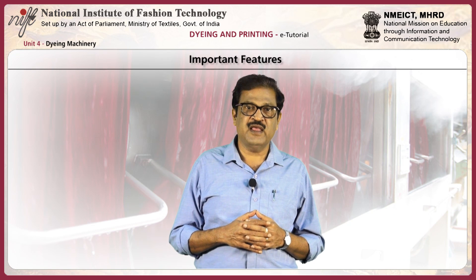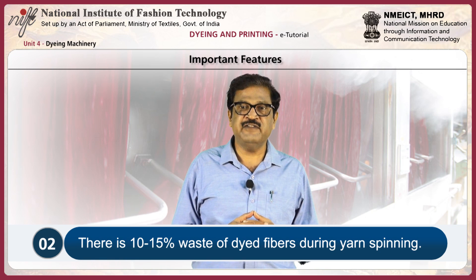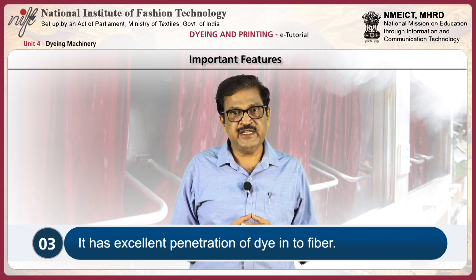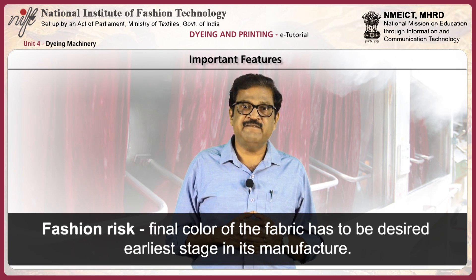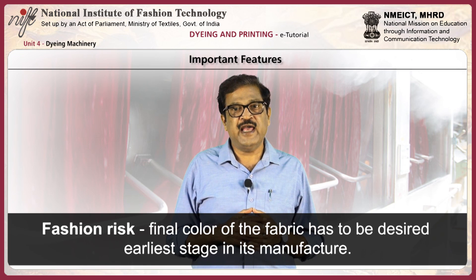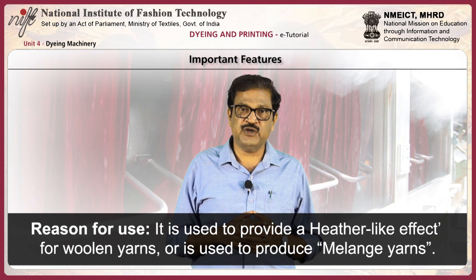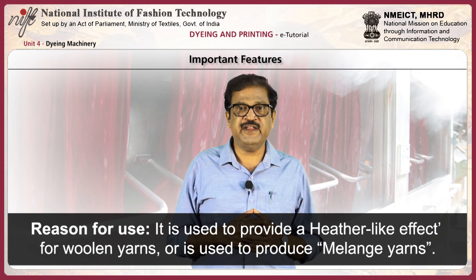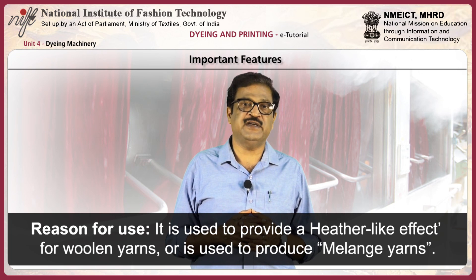Important features of stock dyeing: it is an expensive method of dyeing; there is 10 to 15 percent wastage of fibers during yarn spinning process; it has excellent penetration of dye into fiber; and there is a fashion risk, meaning the final color of the fabric has to be decided at the earliest stage in the manufacture of the product. Stock dyeing is mainly used to provide a heather-like effect for woolen yarns, commonly used for winter jackets, or to produce melange yarns.